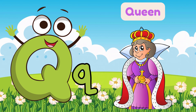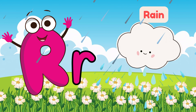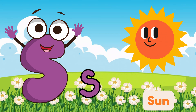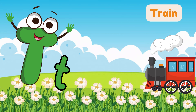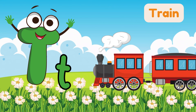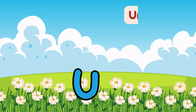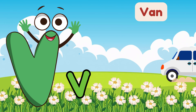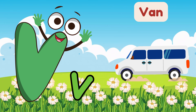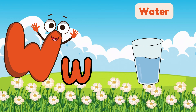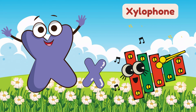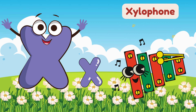Q is for queen, R is for rain, S is for sun, T is for train, U is for umbrella, V is for van, W is for water, X for xylophone in a band.